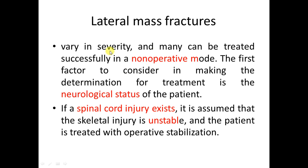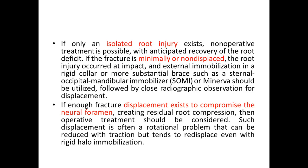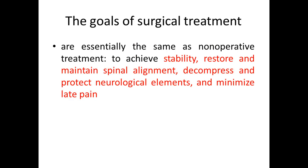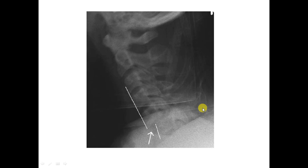Lateral mass fractures: if non-displaced, unilateral, and without neurological deficit, the injury is mostly stable and can be managed conservatively. If displaced, bilateral, or associated with spinal cord injury, it is high-energy and unstable, requiring fixation. In all spinal trauma cases, posterior ligamentous injury must be excluded through midline palpation for a step-off or through MRI. The goals of surgical management are to maintain stability, maintain alignment, and decompress if there is neurological deterioration.